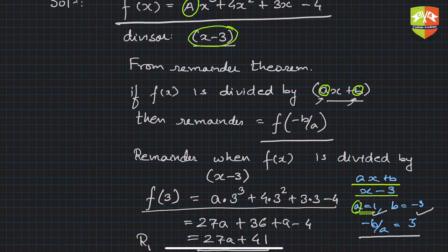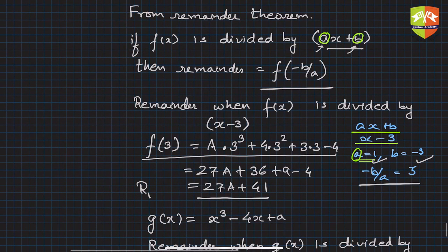I'm converting it to capital A everywhere so there is no confusion. After calculation, you get the first remainder is 27A + 41.